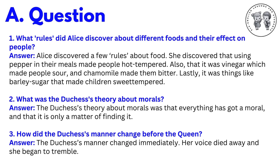Now come to the exercises. Question number one: What rules did Alice discover about different foods and their effects on people? Answer: Alice discovered a few rules about food. She discovered that using pepper in meals made people hot-tempered; also that vinegar made people sour, chamomile made them bitter, and lastly things like barley sugar made children sweet-tempered. Question number two: What was the Duchess's theory about morals? Answer: The Duchess's theory about morals was that everything has got a moral, and that it is only a matter of finding it.